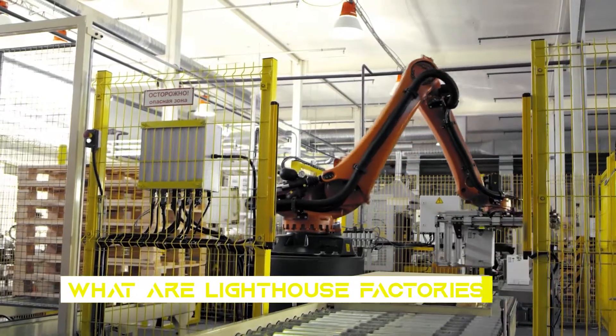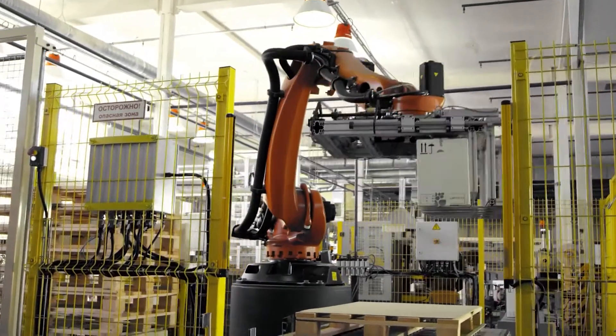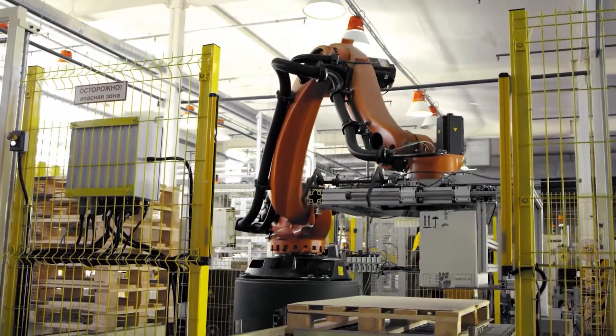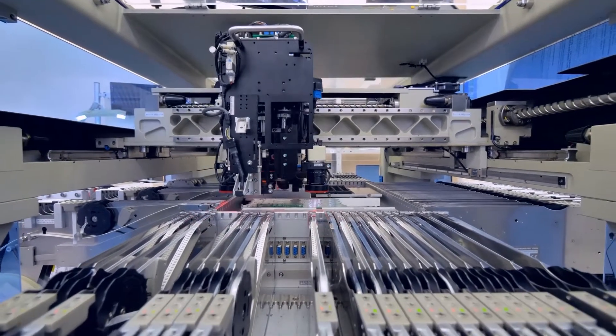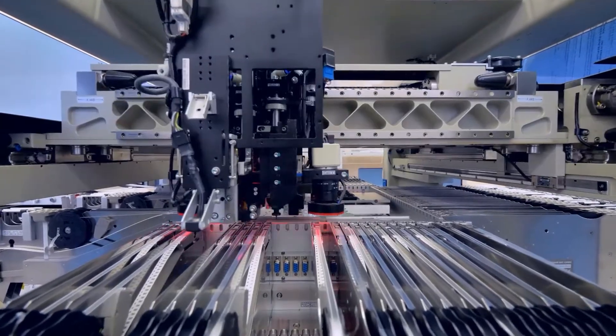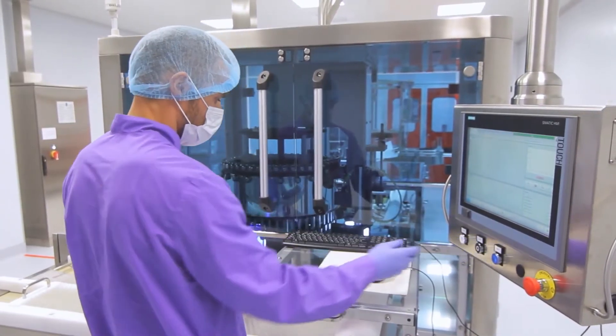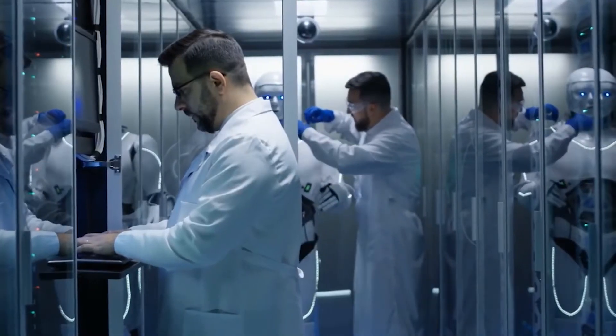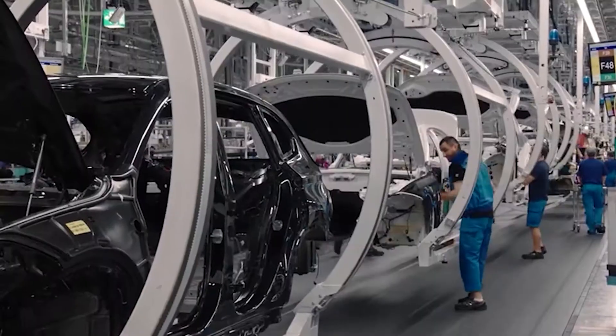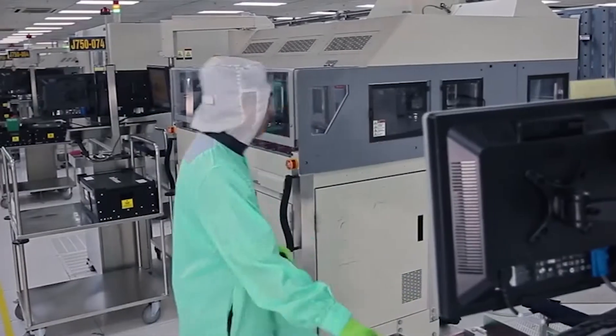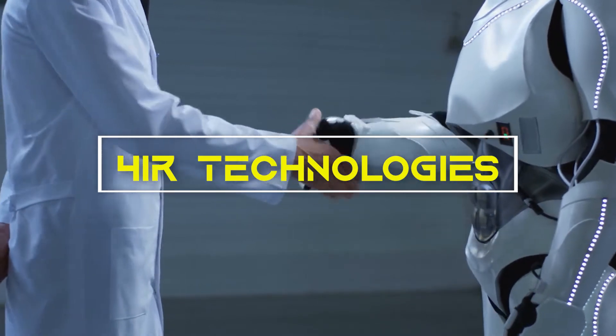What are lighthouse factories? You may be wondering what a lighthouse factory is. There are currently 54 lighthouse factories located all over the globe. They are known as the world's most advanced factories as they are leading the way in the adoption of the fourth industrial revolution technologies, 4IR. These factories have been able to increase their productivity levels and speed of operation, while also staying committed to upskilling their workforce and boosting their eco-credentials.